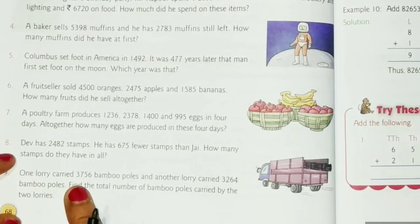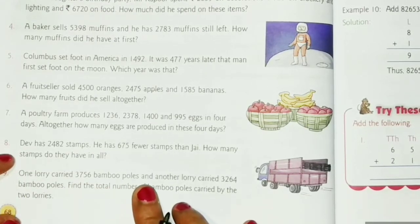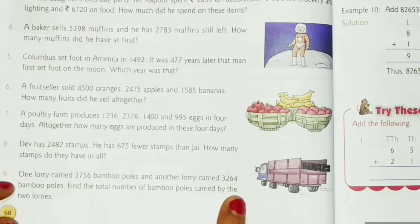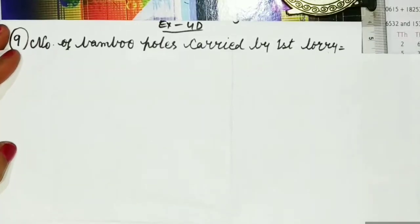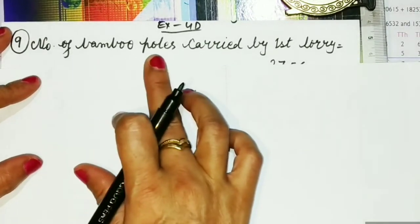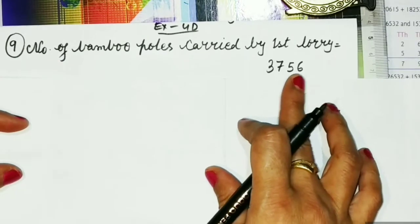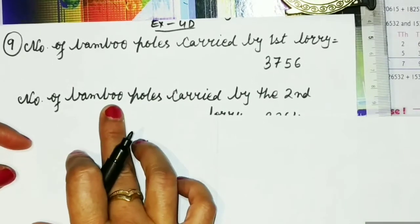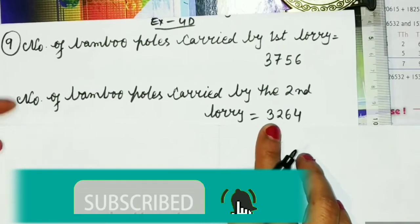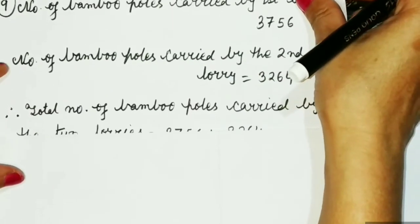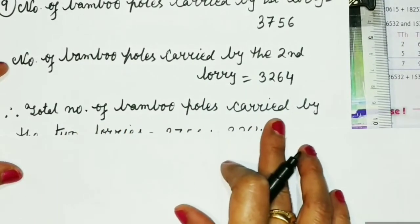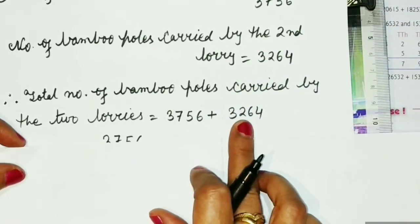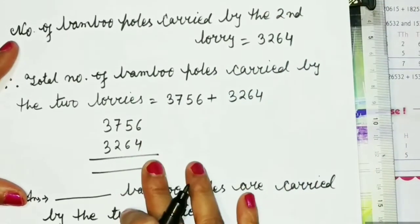Now let's move on to the last question. Question nine says: one lorry carried 3756 bamboo poles and another lorry carried 3264 bamboo poles. Find the total number of bamboo poles carried by the two lorries. The first statement: number of bamboo poles carried by the first lorry equals 3756. Second statement: number of bamboo poles carried by the second lorry equals 3264. Total equals 3756 plus 3264.